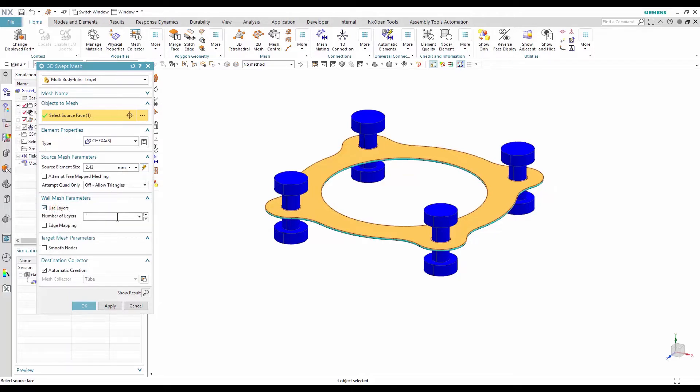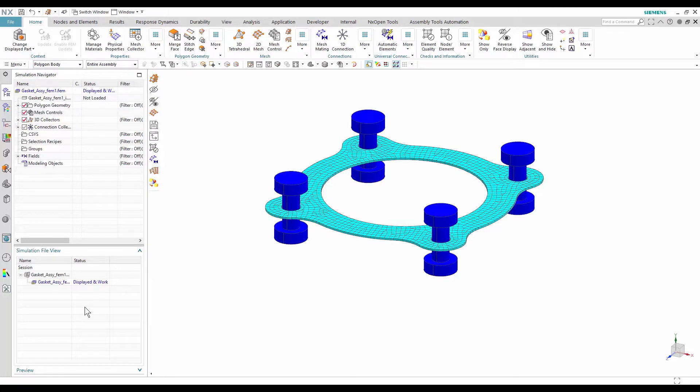To enforce that, I check Use Layers and type 1 as the layer quantity in the 3D swept mesh window. Then, I edit the collector to specify which material to use.